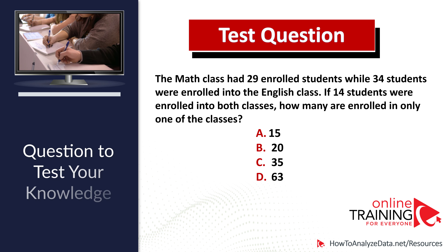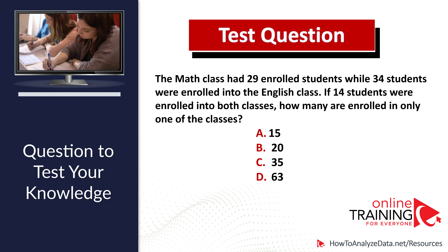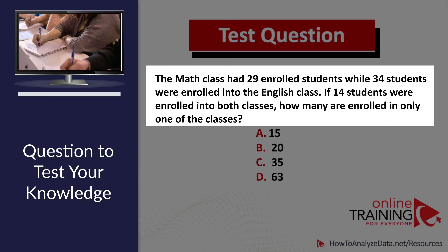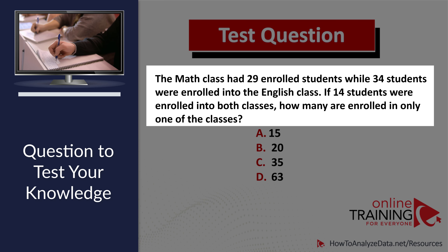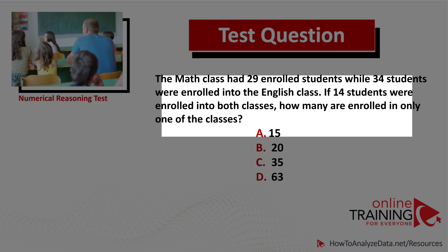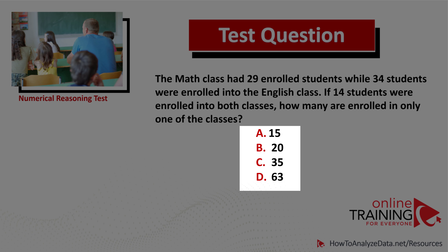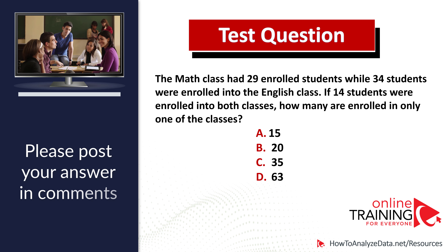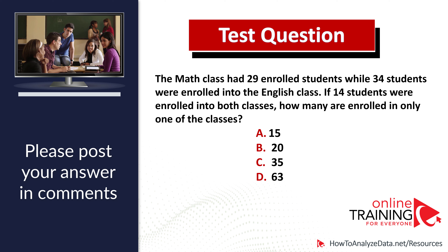Here is a question for you to try. The math class had 29 enrolled students, while 34 students were enrolled in the English class. If 14 students were enrolled in both classes, how many are enrolled in only one of these classes? Choices: A) 15, B) 20, C) 35, D) 63. Please post your answer in the comment section and I or other experts will reply with the correct answer.